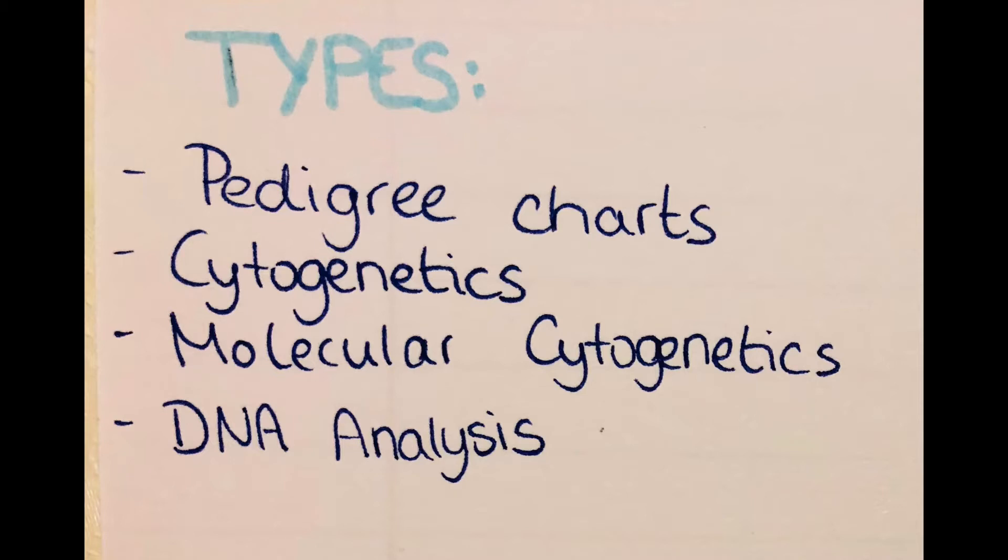The first method I want to talk about is pedigree charts, and because it's such a big topic I already made my own video about it. It's a method which is used to determine the probability of one of the offsprings to be affected by a specific disease. If you want to know more about it, just click on the banner above and watch the entire video.